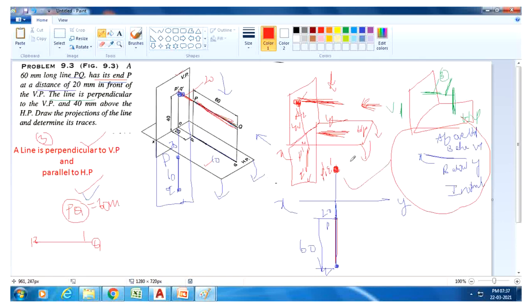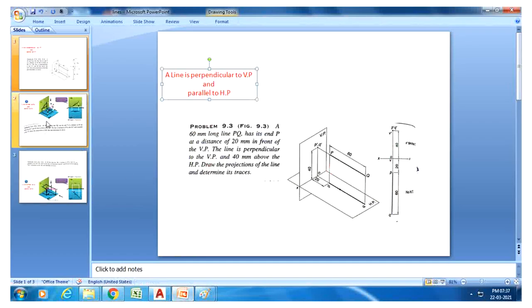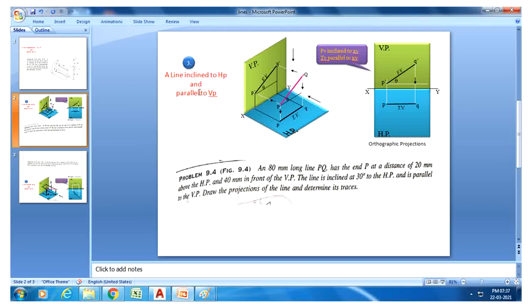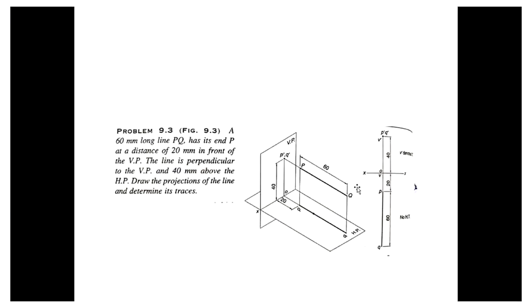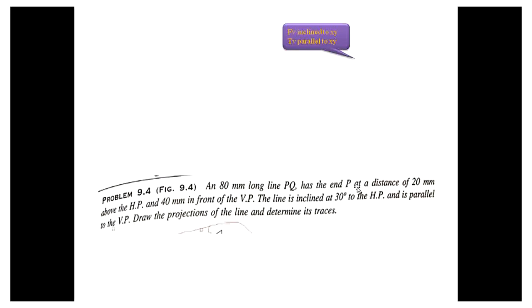The next condition is a line inclined to HP and parallel to VP. The question: an 80mm long line PQ has end P at a distance of 20mm above HP and 40mm in front of VP. The line is inclined 30 degrees to the HP and is parallel to the VP. Draw its projections.